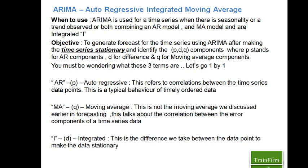The last term is I, which stands for Integrated — we are integrating AR and MA. To make the data stationary, we go ahead and take a difference between data points. It could be a first-order difference or a second-order difference. The number of differences we take is denoted by the letter D. So these three basic ingredients — P, D, and Q — are the building blocks required for me to generate an ARIMA forecast.